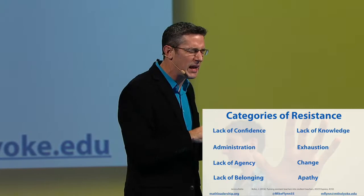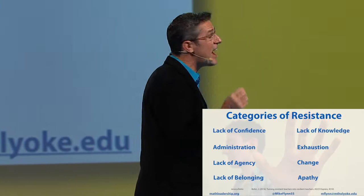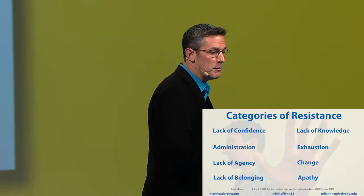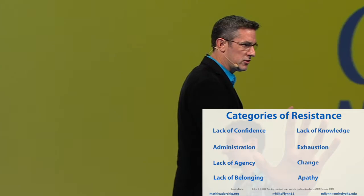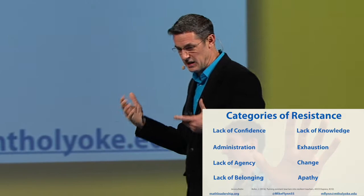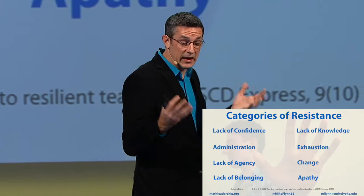I want you to reflect for a moment. If you have a teacher who's resisting something, or a parent who's resisting — whatever resistant behavior you're encountering — where would you categorize it? Is it one of these? If so, what would be your first steps to solve that problem? It is essential for us to understand, because the kind of thing Sam would need around lack of confidence is not the same thing someone would need if they were just exhausted, or if they didn't get along with the principal. So the ways we approach resistance to change pivot based on the needs of the person at that time.